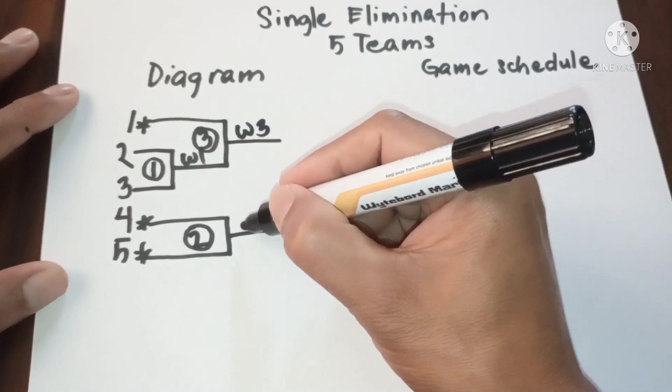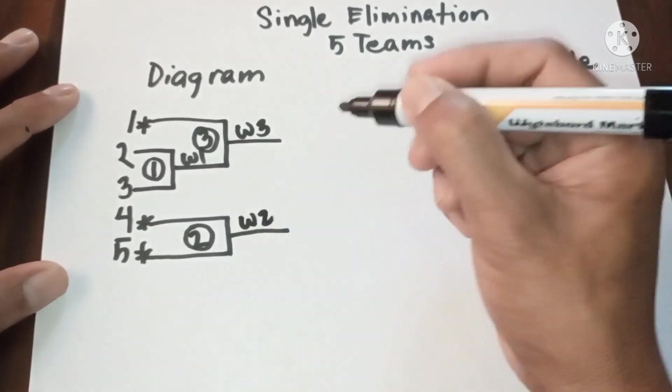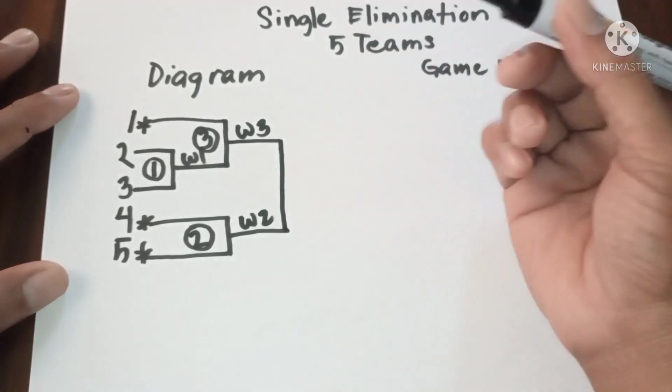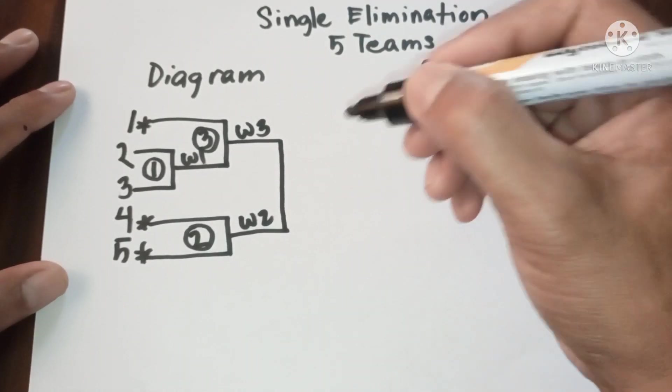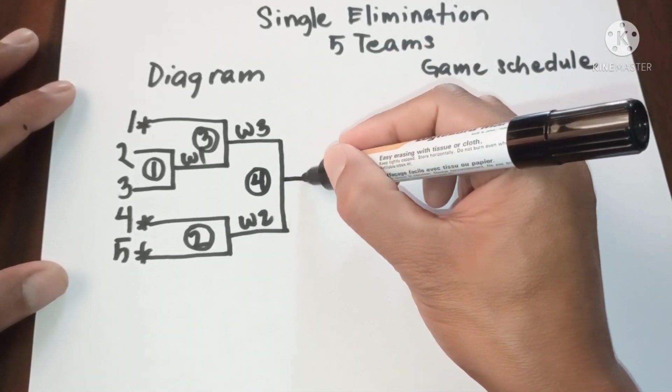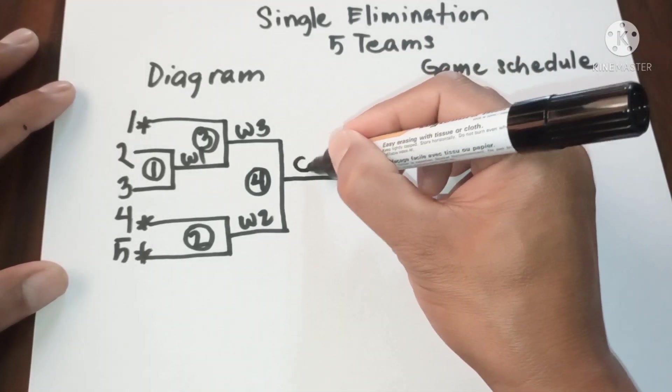Now let's have the results: winner three, winner two, winner three, winner one. And then the last game, game four, for the champion.